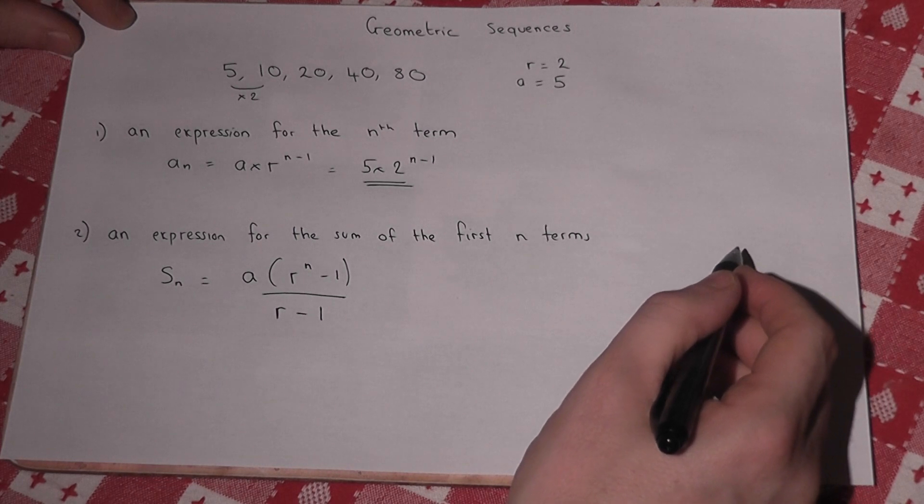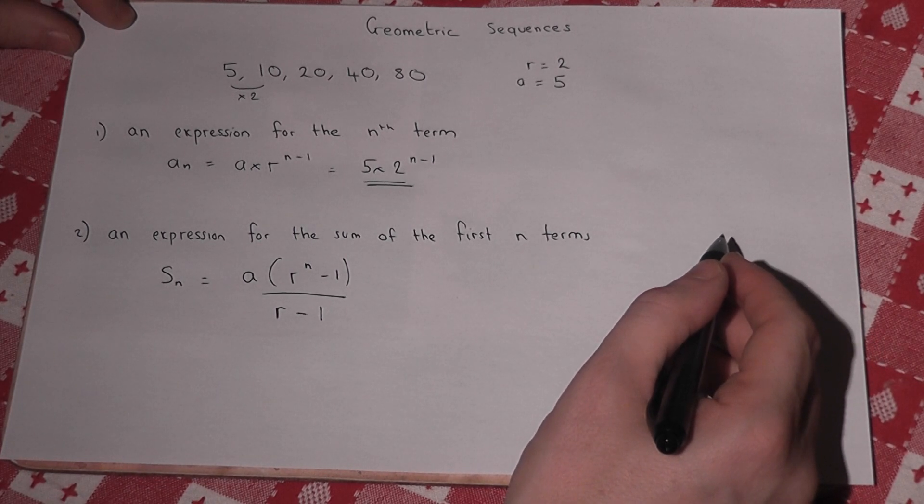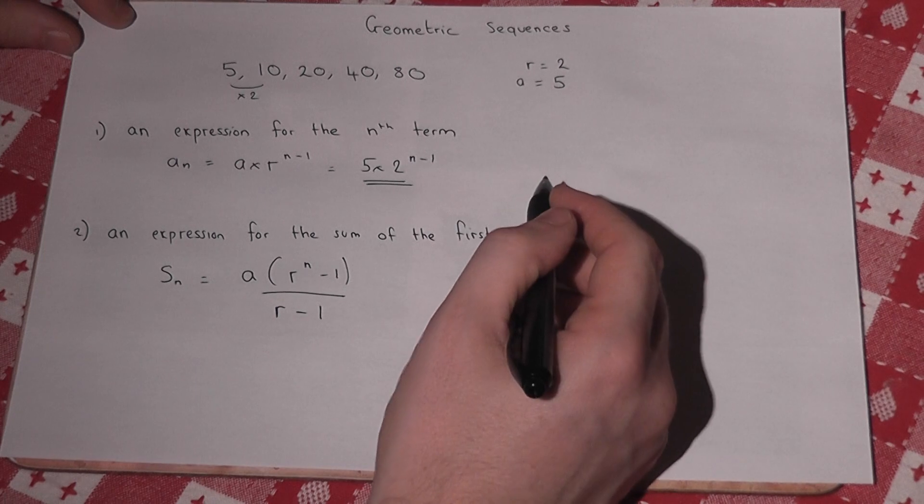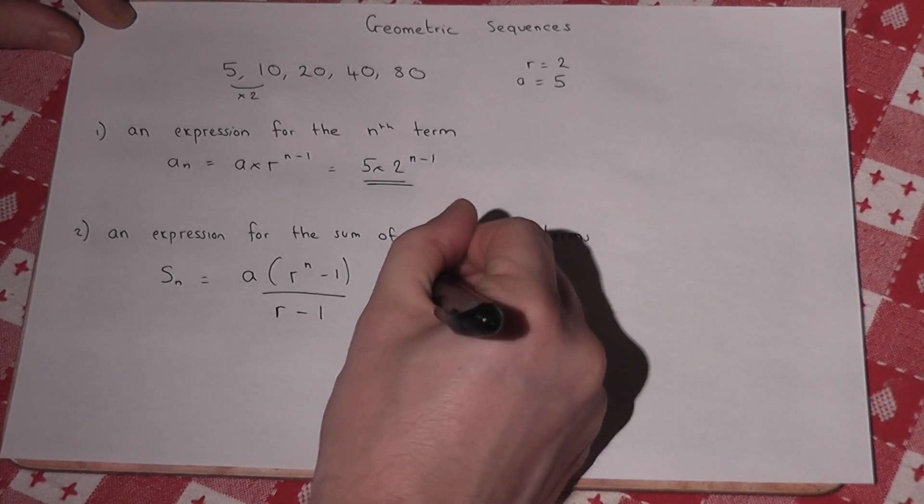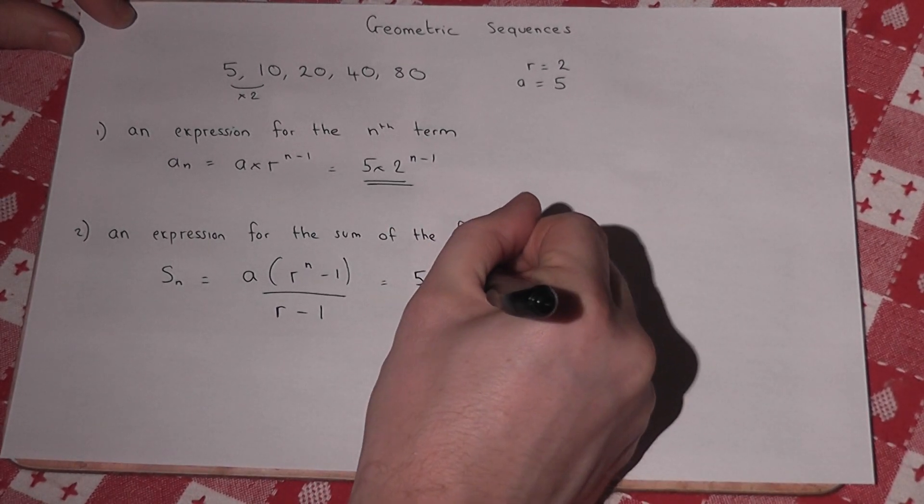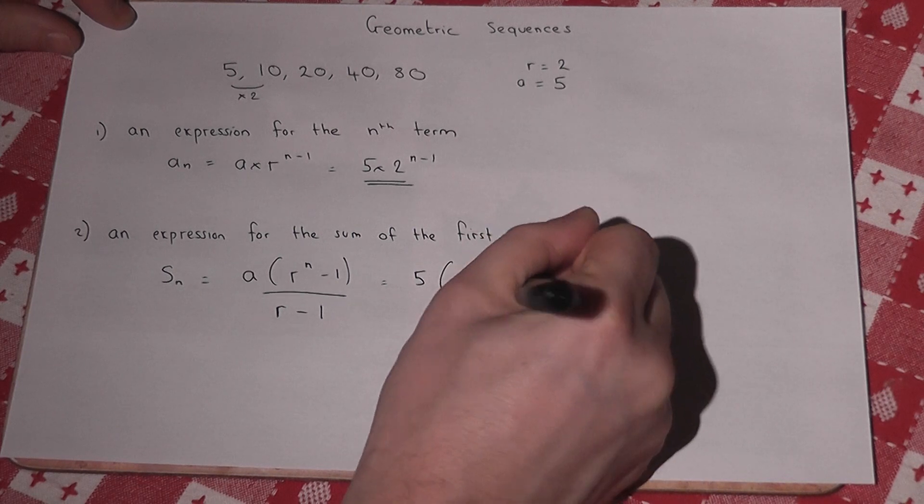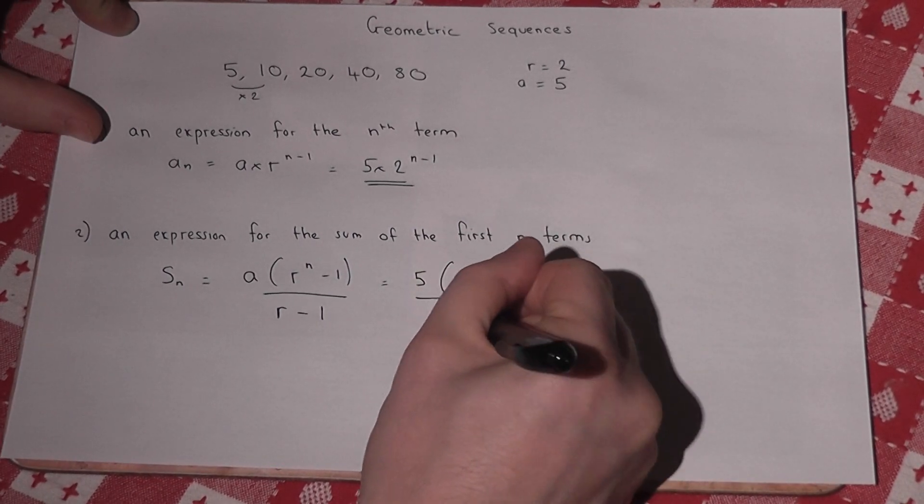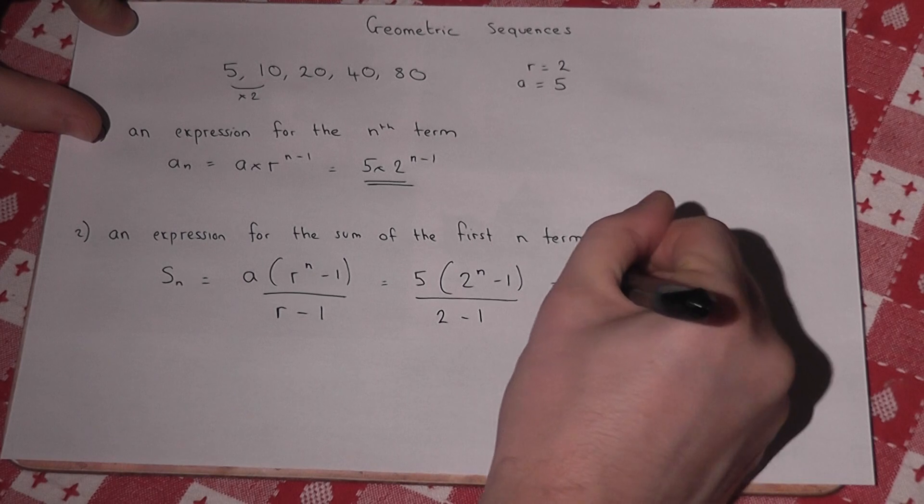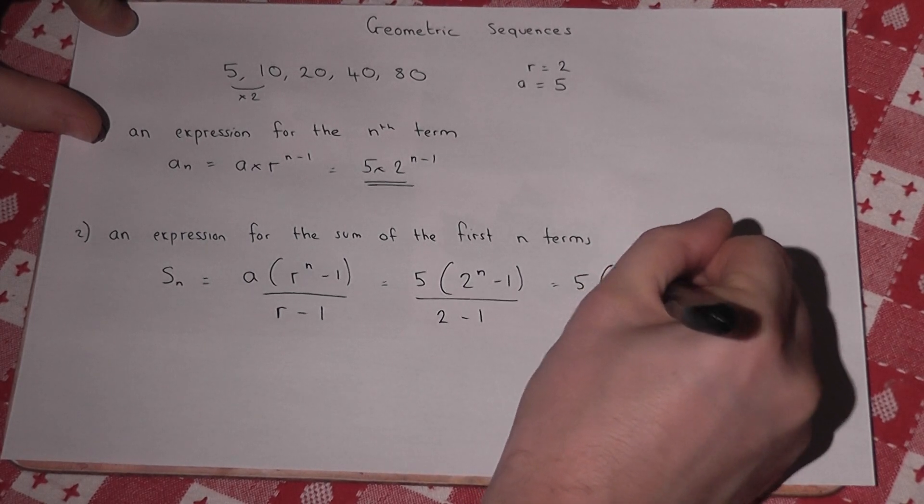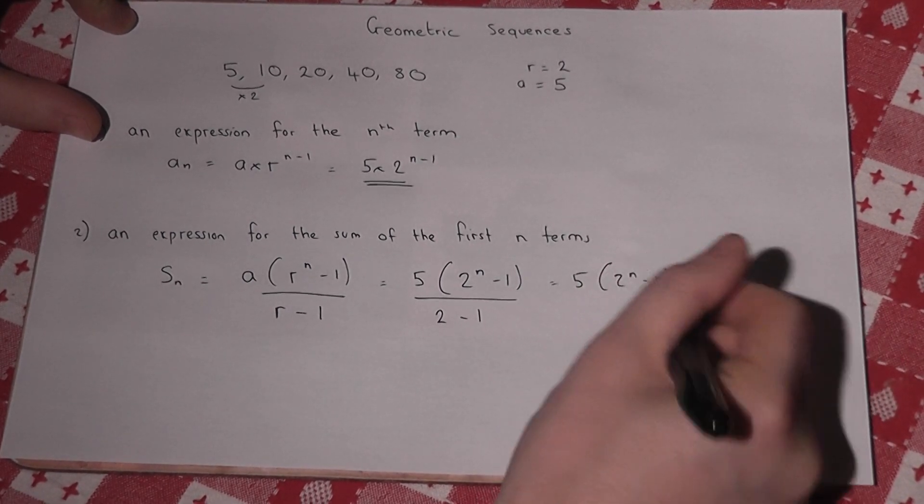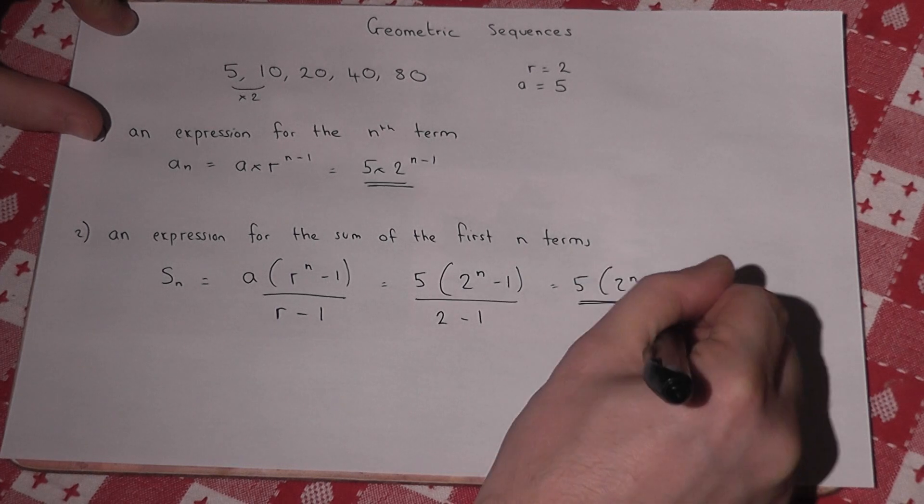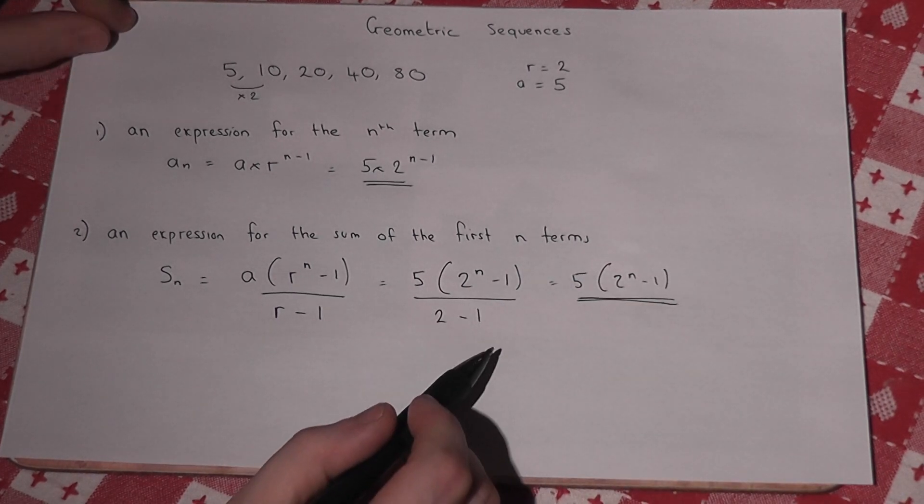And this is true for any geometric sequence. So a is 5, r is 2. So it's 5 lots of 2 to the power of n minus 1, all over 2 minus 1, which is 5 lots of 2 to the power of n minus 1 all over 1. So therefore that is an expression for the sum of the first n terms.